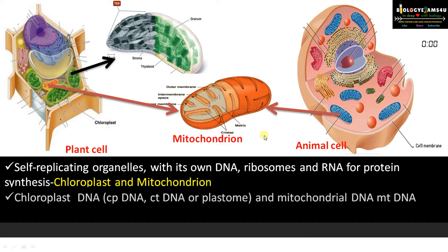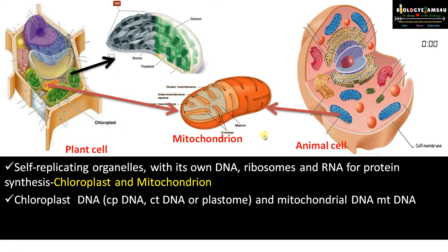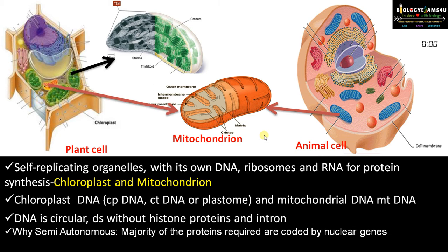The DNA of chloroplast is called cpDNA or plastome, whereas the DNA of mitochondria is called mtDNA. This DNA is circular, double-stranded, without histone proteins — just like prokaryotic DNA.